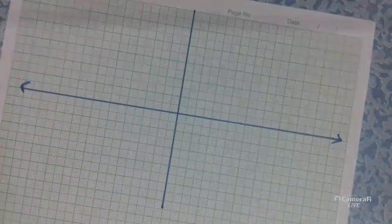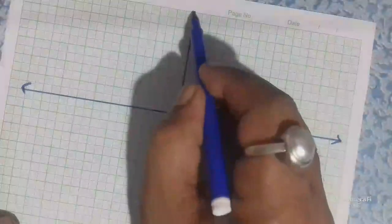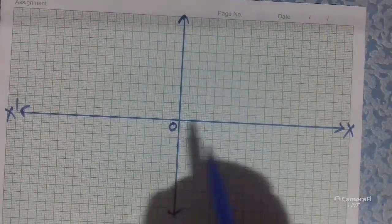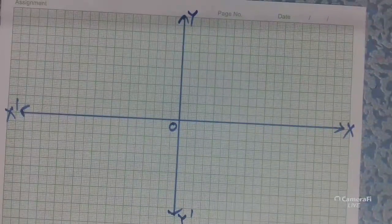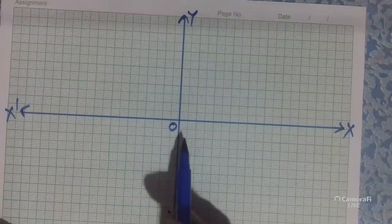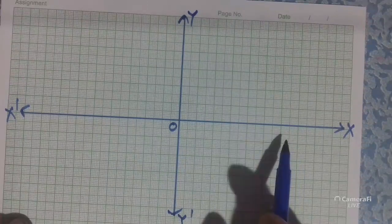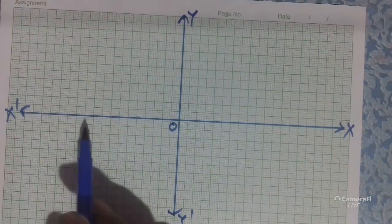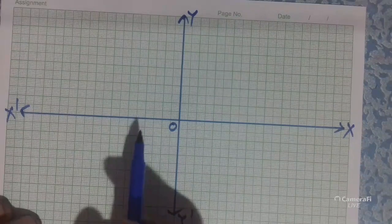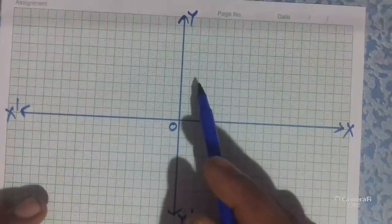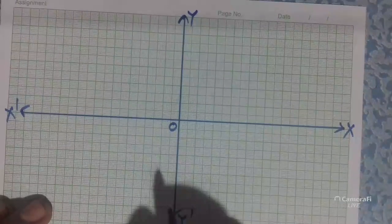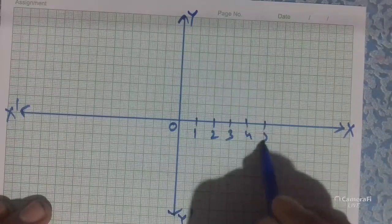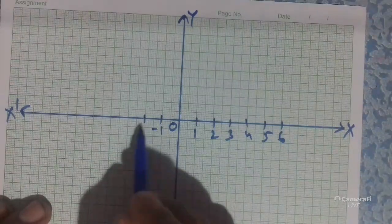The first problem is to write the abscissa of the following points: (0, 5) and (-2, 4). As you know, the first value is for x and the second value is for y. Abscissa means we have to take the first value of the point. So the abscissa of the first point is 0.